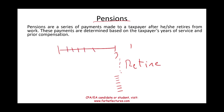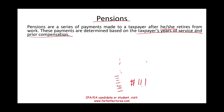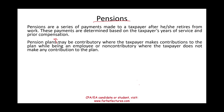These payments are determined based on the taxpayer's years of service and prior compensation. There is a formula in the retirement plan — each individual gets paid differently based on actuarial assumptions, but generally the more time you put in and the higher your salary, the higher your pension amount. Pension plans may be contributory, where the taxpayer makes contributions while employed, or non-contributory.